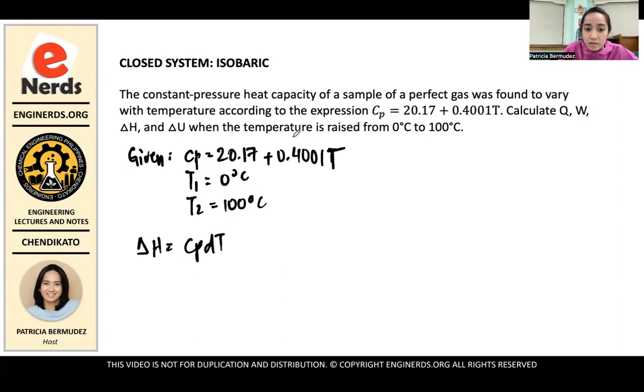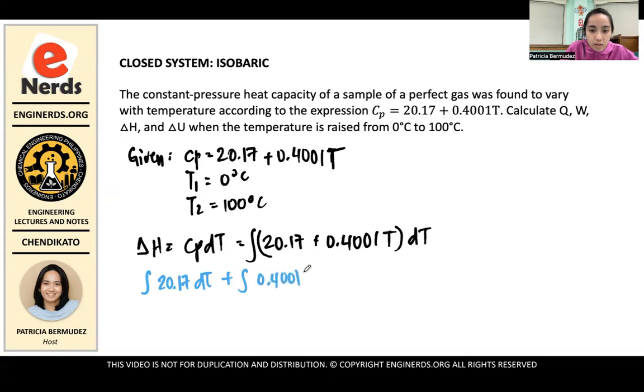So the easiest variable among the four to find here is delta H. Because the formula for delta H is CP dT, right? And it's convenient because your CP is in terms of T. So when you substitute it here, it will really be an integral that we can integrate later. So, substituting that, we have 20.17 plus 0.4001T. And then we put it inside parenthesis, dT, and then we integrate.